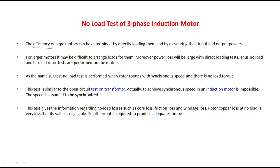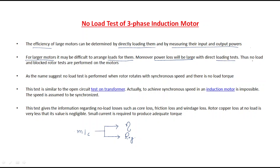The efficiency of large motors can be determined by direct loading, by measuring input and output powers. For any machine, two things are important to understand performance: efficiency and regulation. For large motors, it may be difficult to arrange loads, and power loss will be large by direct loading. If you are using a high load, the power loss is also very high.